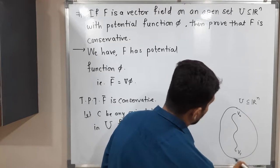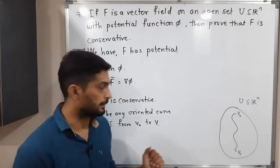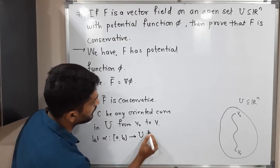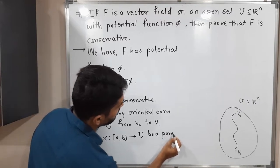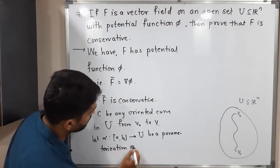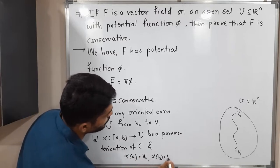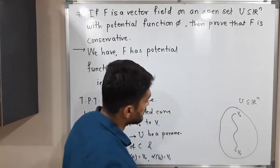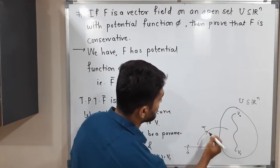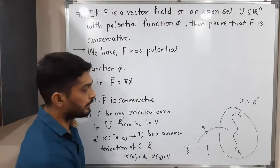Let C be any oriented curve in U from v₀ to v₁. We consider its parameterization: let alpha be a parameterization of this curve C, defined from the closed interval [a, b] to U, with alpha(a) = v₀ and alpha(b) = v₁.